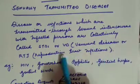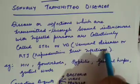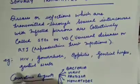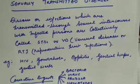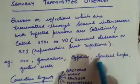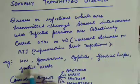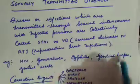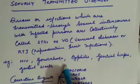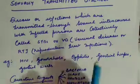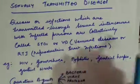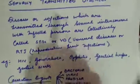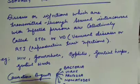RTI means Reproductive Tract Infections. Examples of STDs include HIV, gonorrhea, syphilis, genital herpes, and genital warts — all these fall under the category of sexually transmitted diseases. In the book, you have the disease name and its causative agent, which you need to learn.